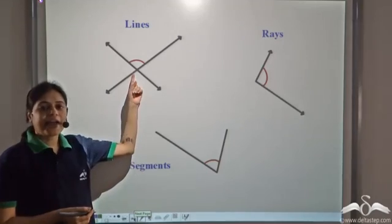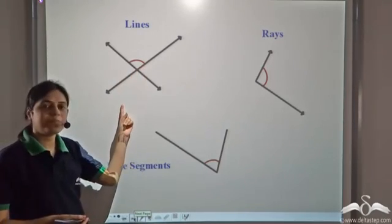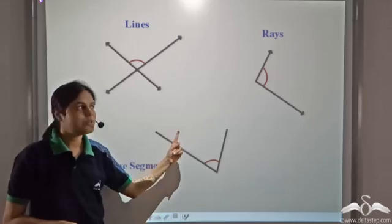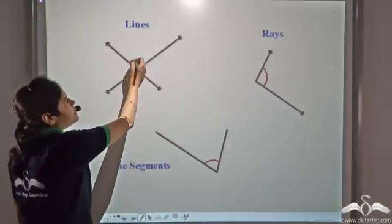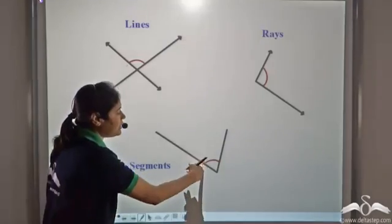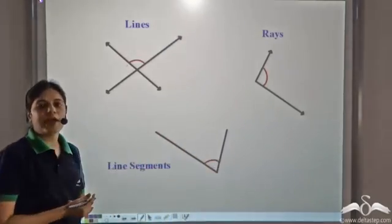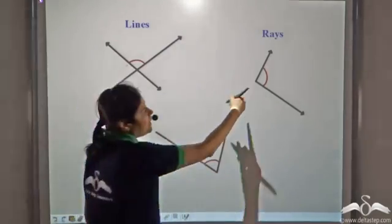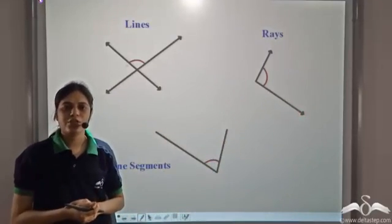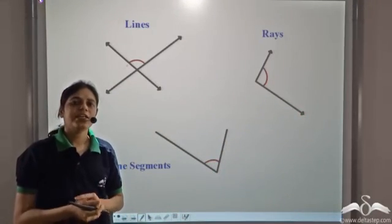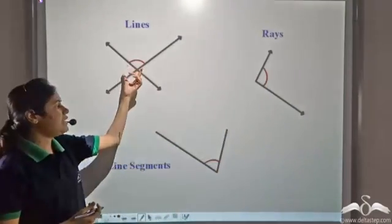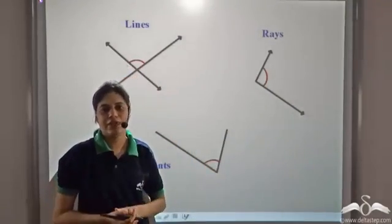We know that angles are formed when lines meet and also when line segments meet. So this angle is formed when these two lines meet, and this angle is formed when these two line segments meet. So it is not necessary that angles will be formed by rays only — they may be formed by lines or line segments as well.